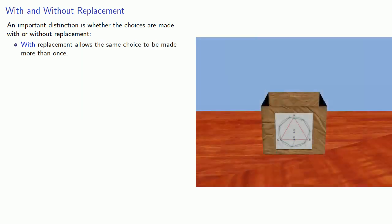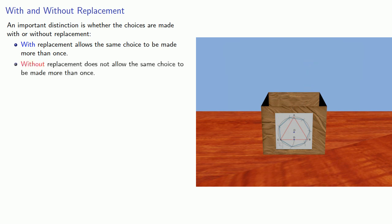Now, in order to have any chance of using the formula, we have to introduce the following idea. An important distinction is whether our choices are made with or without replacement. Making our choices with replacement allows the same choice to be made more than once. If we make our choices without replacement, this does not allow the same choice to be made more than once.